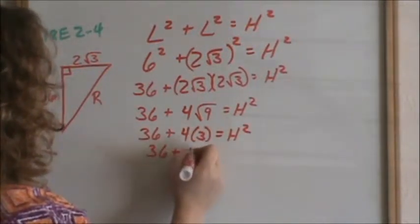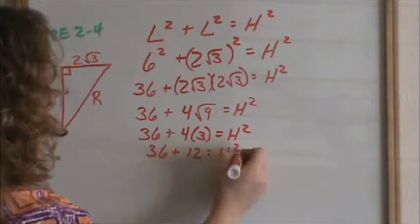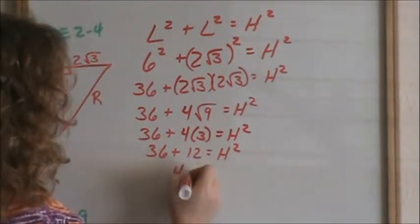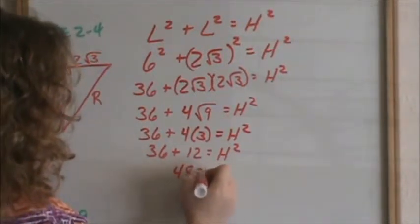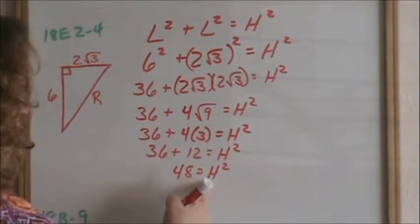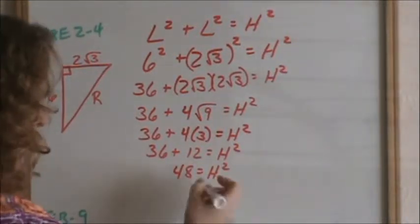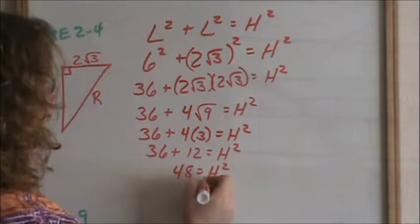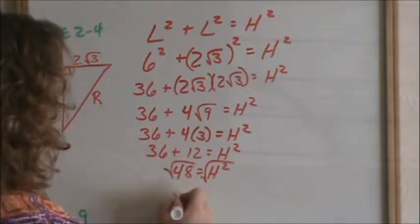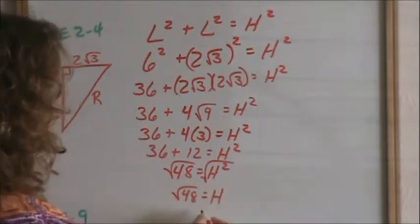Now you have 36 plus 12 equals h squared. 36 and 12 is 48. We're not done there — we're trying to solve for h, not h squared. Therefore, we need to take the square root of both sides. So, h equals square root of 48.